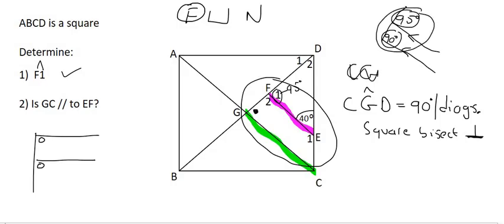We can see that these two angles are different. Since F1 is 95 and G is 90, we can say therefore GC is not parallel to EF.